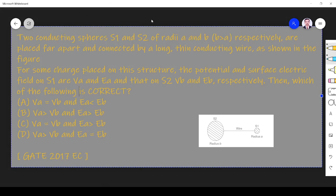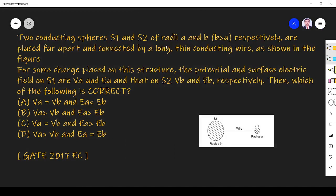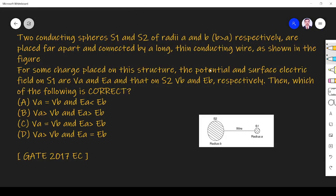For some charges placed on the structure, the potential and surface electric field on S1 is VA and EA and that on S2 is VB and EB respectively. Then which of the following is correct?